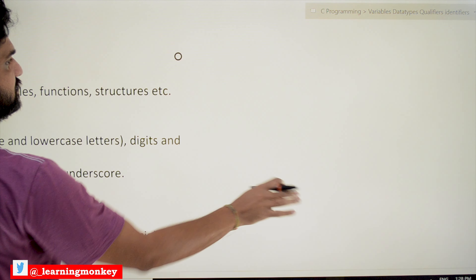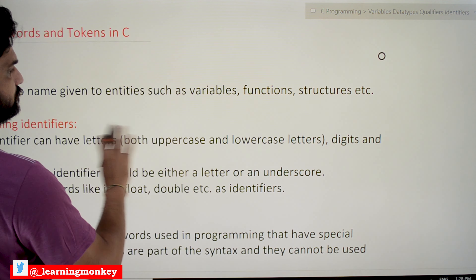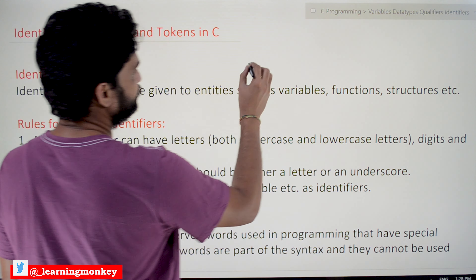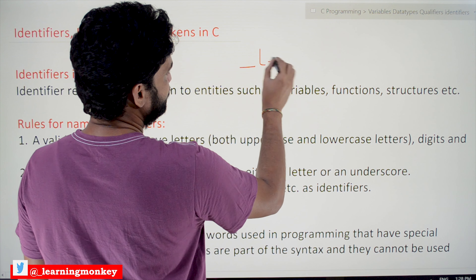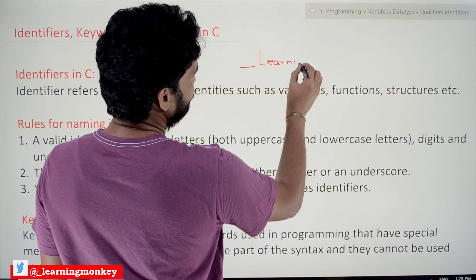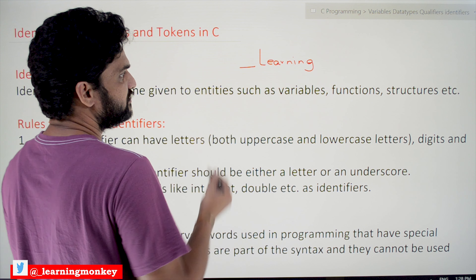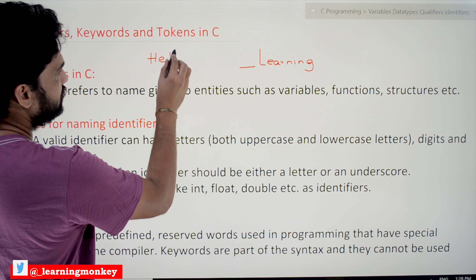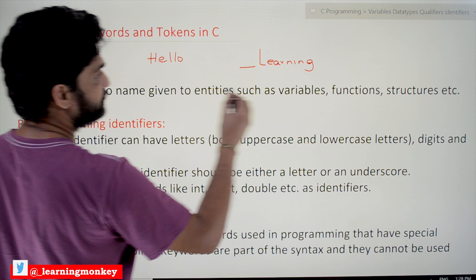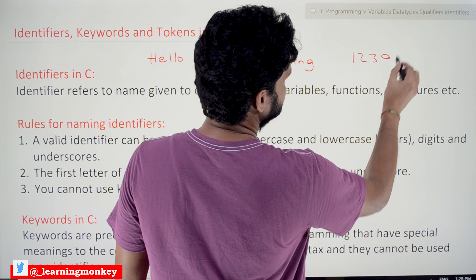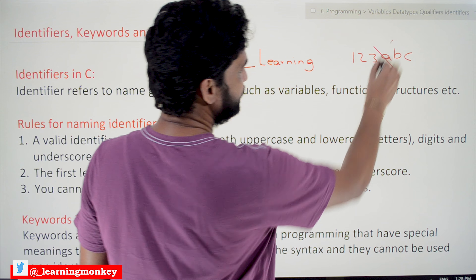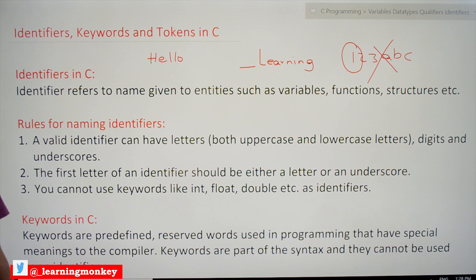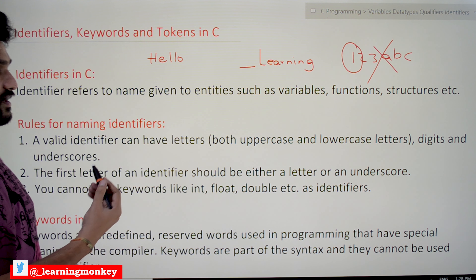Let's write some valid identifiers. For example, 'a_learning' — can it be a valid identifier? Yes, it is a valid identifier. Another one is 'hello' — hello can also be a valid identifier. Now, if you consider '123abc' — is it a valid identifier? No, it is not a valid identifier, because the first letter should always be either a letter or an underscore.